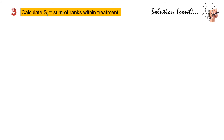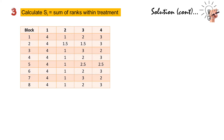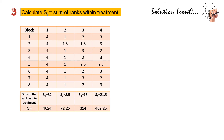The third step is to calculate the sum of ranks within the treatment. Using the ranks solved in the second step, the sum of ranks of treatment 1 is S1 = 32, which is the sum of ranks for all 8 blocks. S2 is 8.5, S3 is 18, and S4 is 21.5.